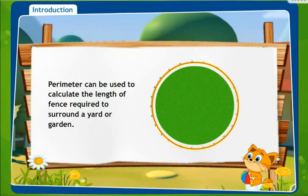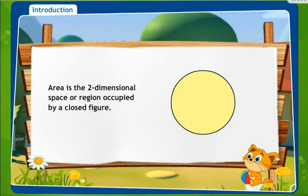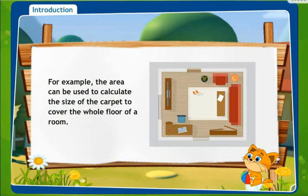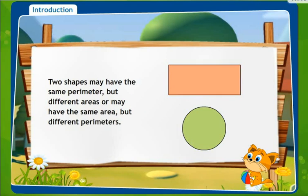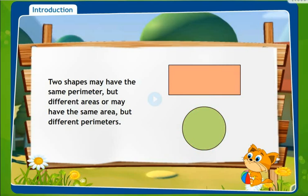In a circle we have studied about circumference. Now, area. Area is the two dimensional space or region occupied by a closed figure. For example, the area can be calculated to measure the size of the carpet to cover the whole floor of a room. When we are calculating the area of the carpet, it is actually the area it is going to cover on the floor. Two shapes may have the same perimeter but different areas, or may have the same area but different perimeters for different geometrical figures.